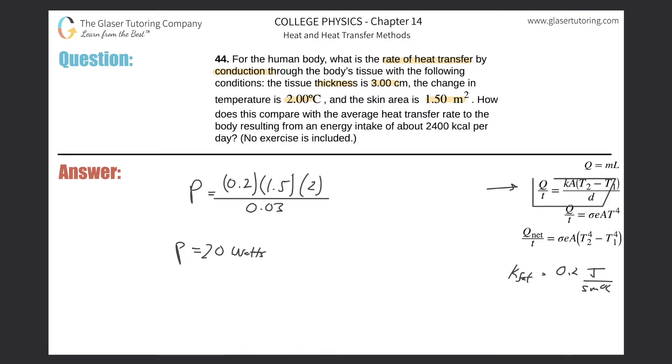So basically, this is 20 watts, and 20 watts is equivalent to joules per second. So it's 20 joules every second the body is dissipating this amount of heat. And then the second part, what does it say? It says how does this compare with the average heat transfer rate to the body resulting from an energy intake of about 2400 calories per day.